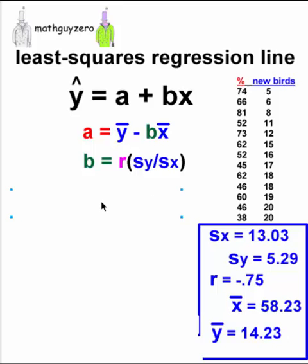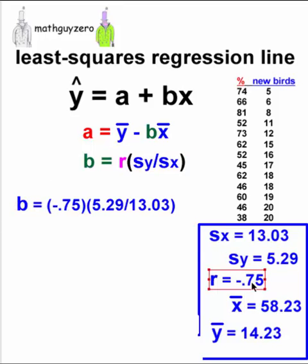Looks like we're going to have to find the b value first. So the b is the correlation times the standard deviation of y divided by the standard deviation of x.